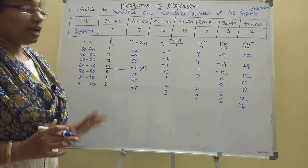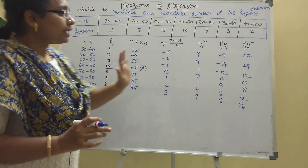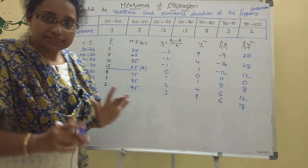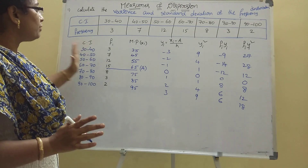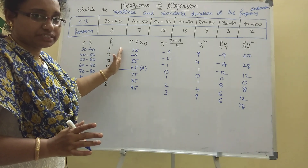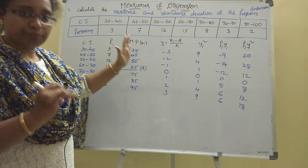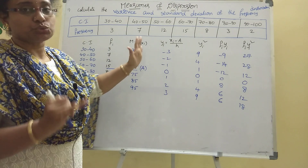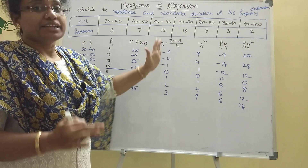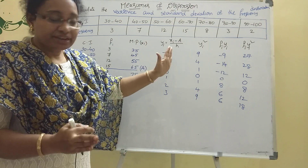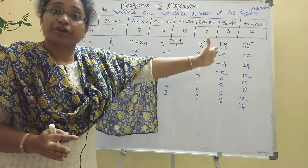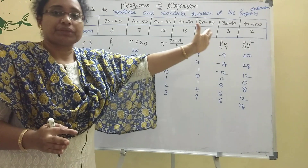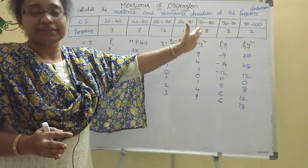So the columns we need are: class interval, frequency, midpoint xi, yi, yi², fi·yi, and fi·yi². The sum of fi·yi and fi·yi² are the key totals needed for the formulas.